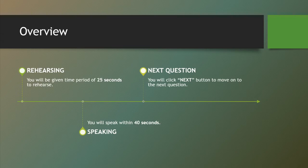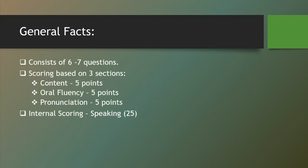As soon as you finish speaking you can click on the next button to move on to the next question. You will be given six to seven questions and your scoring will be based on three sections: content, oral fluency, and pronunciation, with five points each. Since this is a speaking exercise involving speaking only, it has an internal scoring of 25 points to speaking.